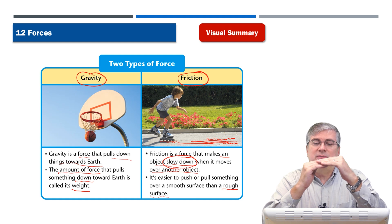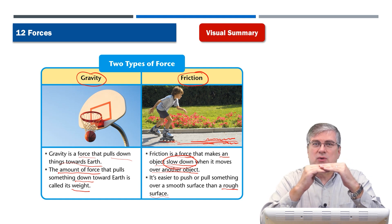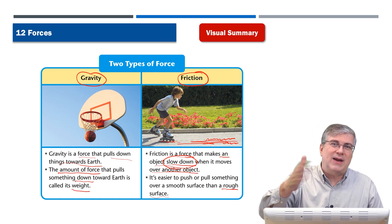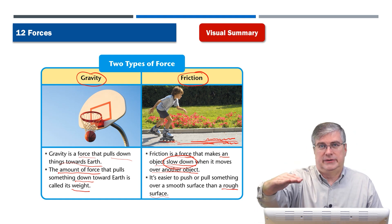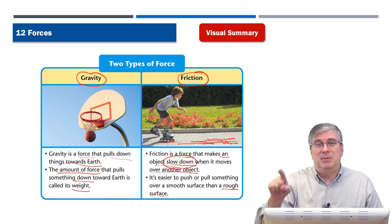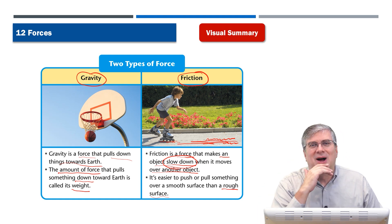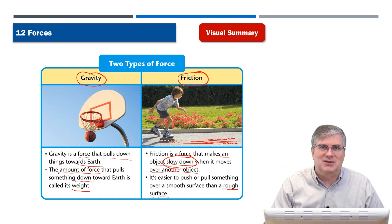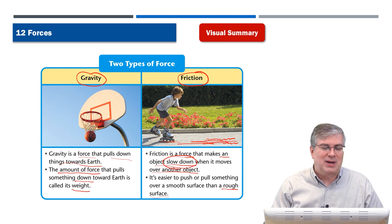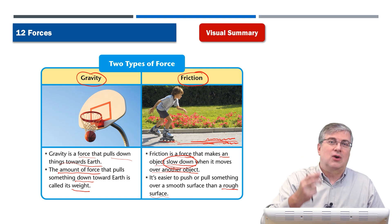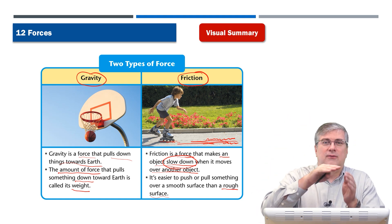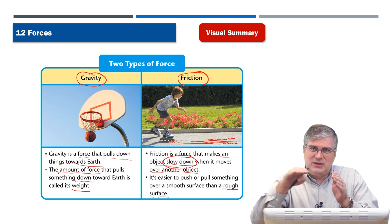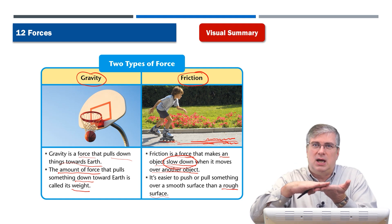When two objects meet each other, they have friction between them. So if you want to go faster, make a smooth surface. But if you want to slow things down, make a bumpy surface. That's part of the reason why the roads near your house might have a bump. So we have two forces: gravity, which pulls things to the earth, and friction, which slows objects down as they move on top of another surface.